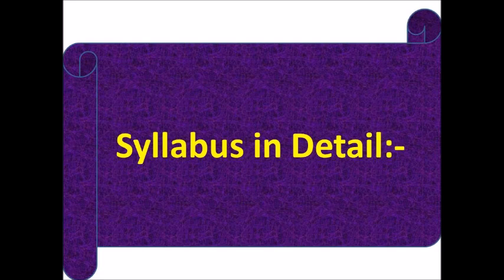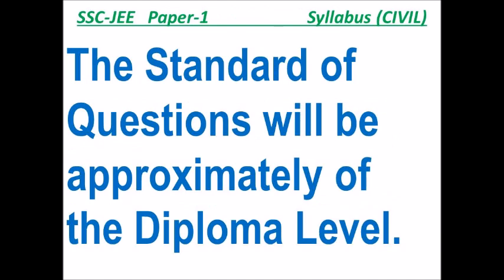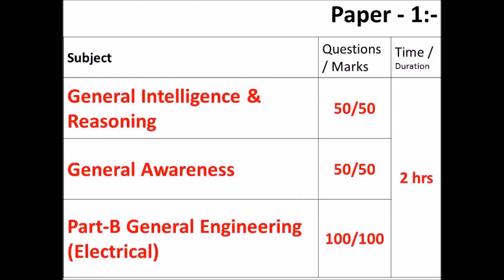Here is the syllabus in detail. We will discuss the detailed syllabus. First, Paper 1 will consist of Objective Type or Multiple Choice Questions only. The language of the examination is English and Hindi — you can write either. The standard of the questions will be approximately Diploma in Engineering Level.